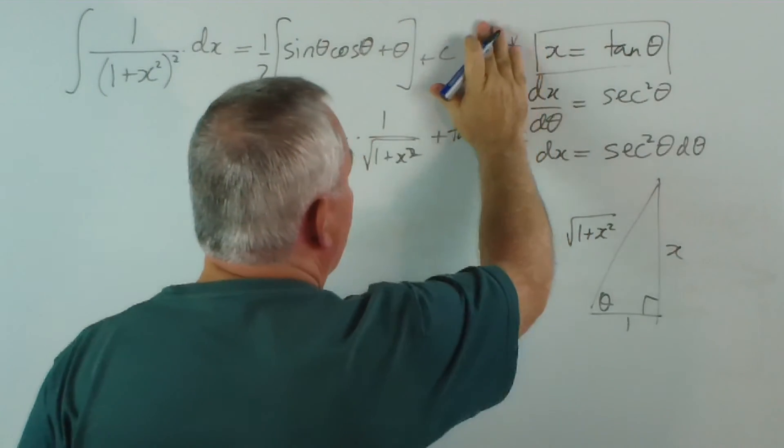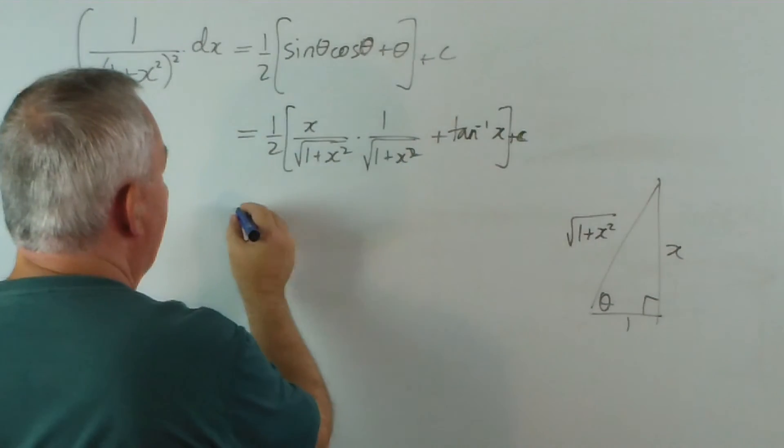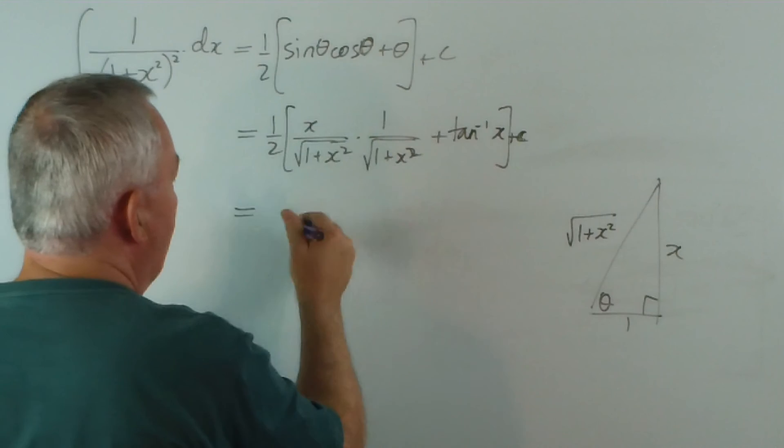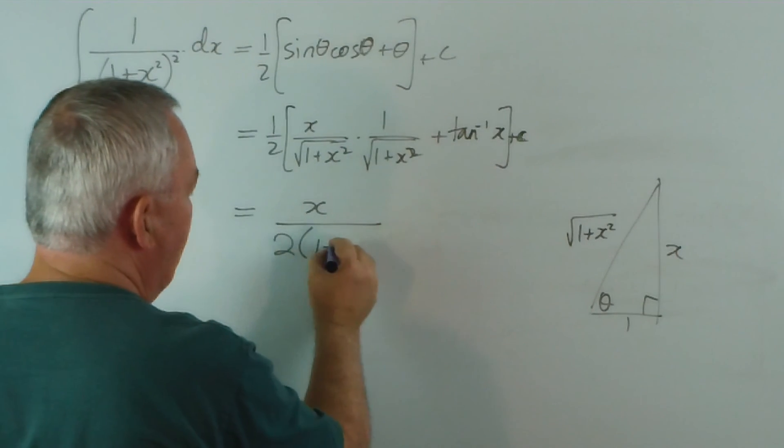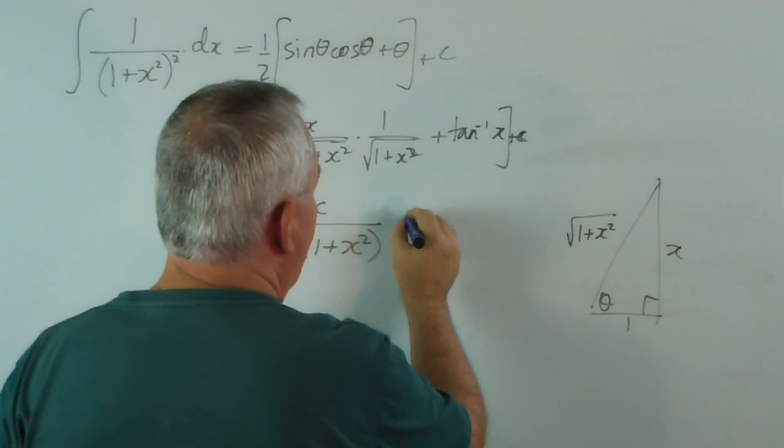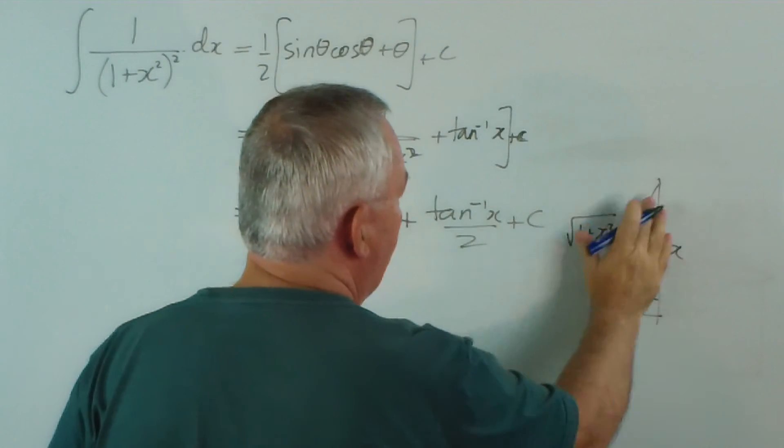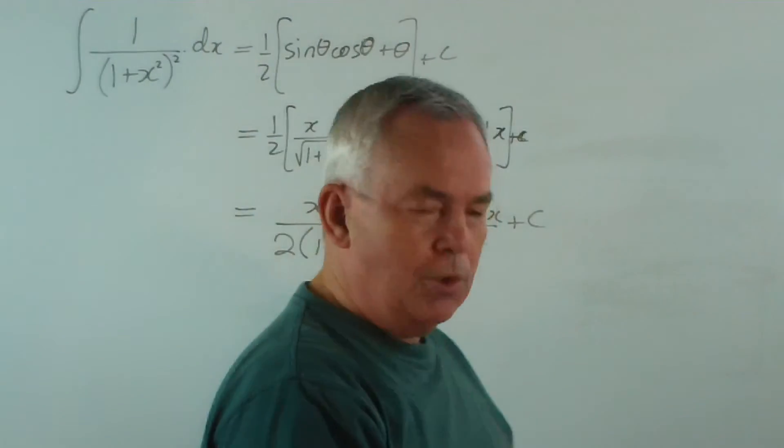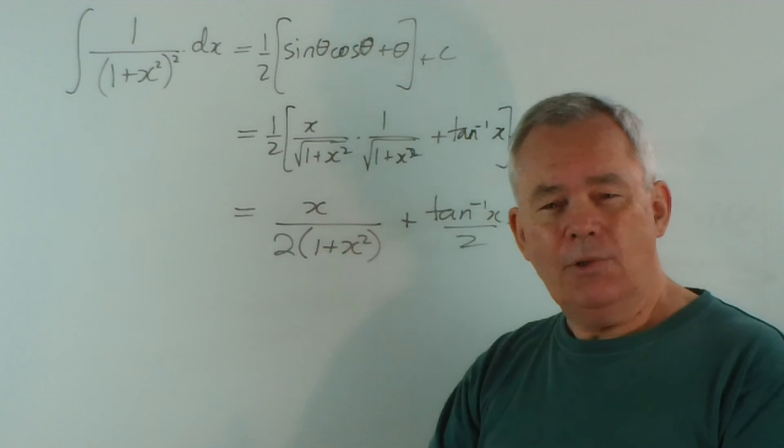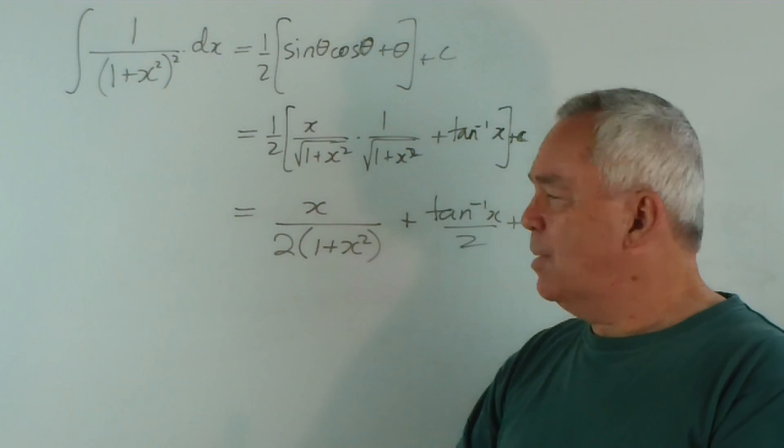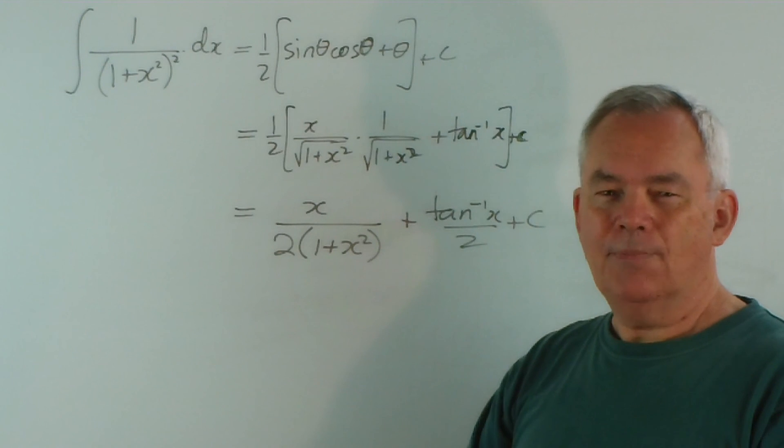So tidying all this up: x times 1 is just x, and on the bottom I've got 2, and this product just simply gives me 1 + x². And I also have half of this inverse tan function, plus c. And that is the solution to our integral. There are a number of significant steps in resolving this integral. I hope you've found it interesting and informative, and perhaps even a little bit challenging, but I hope it's given you food for thought and some ammunition for resolving future integrals. And I thank you for watching.